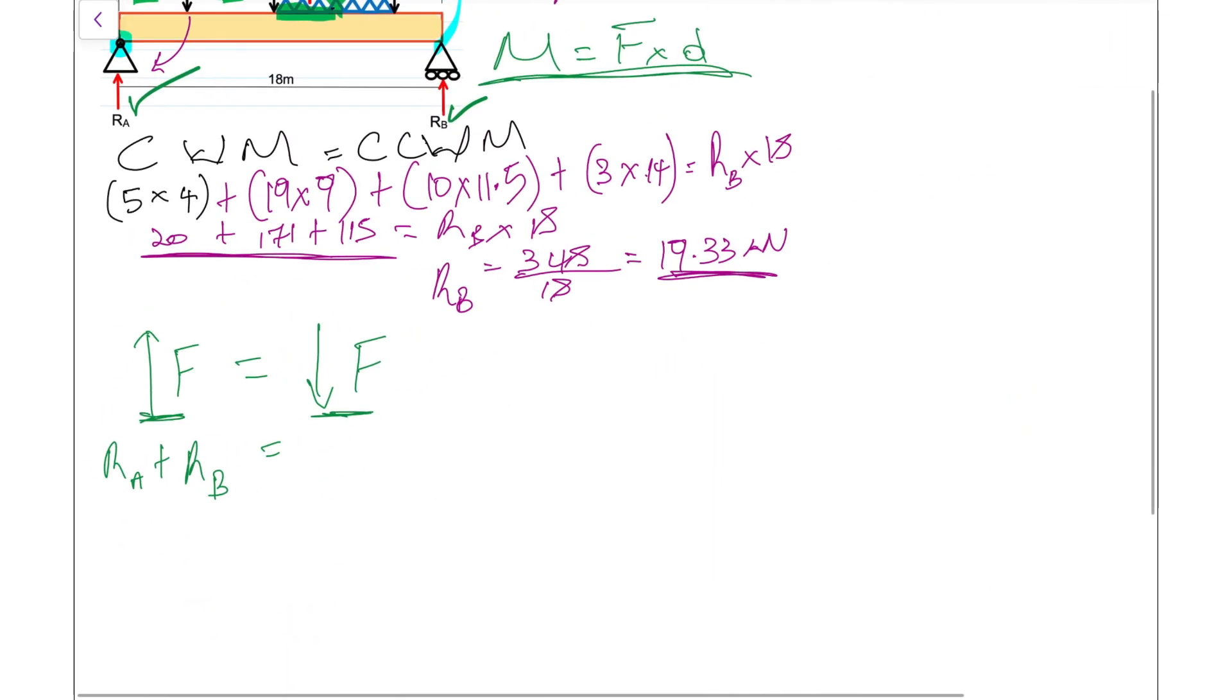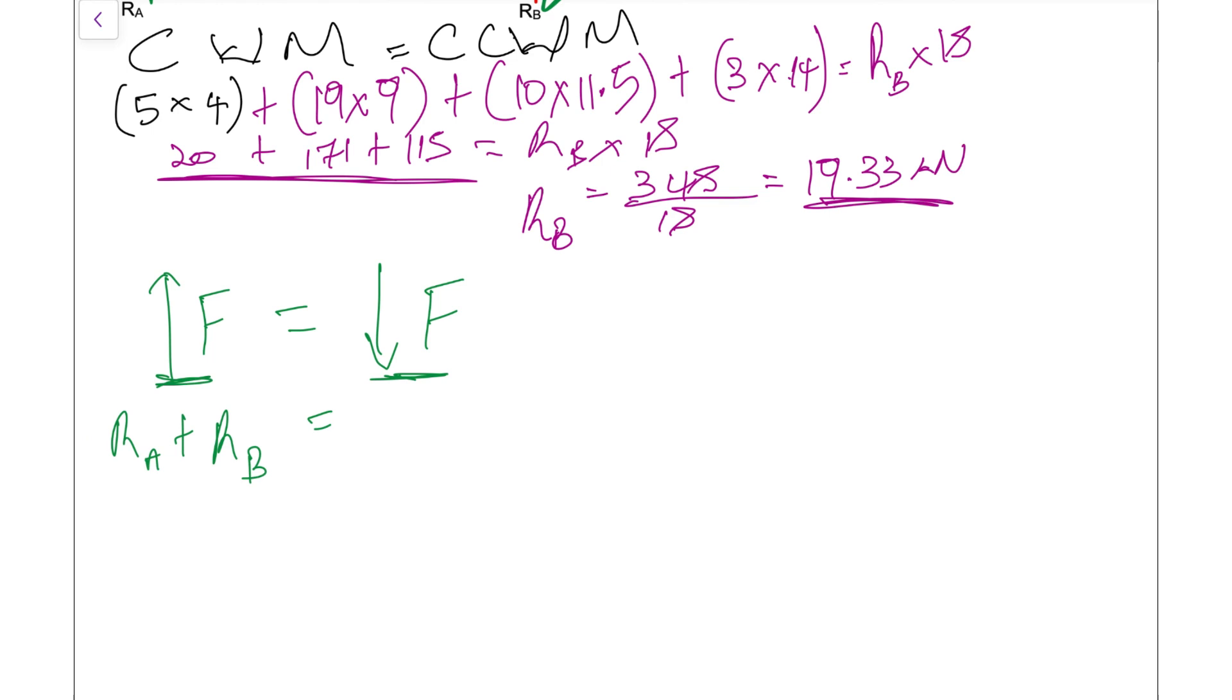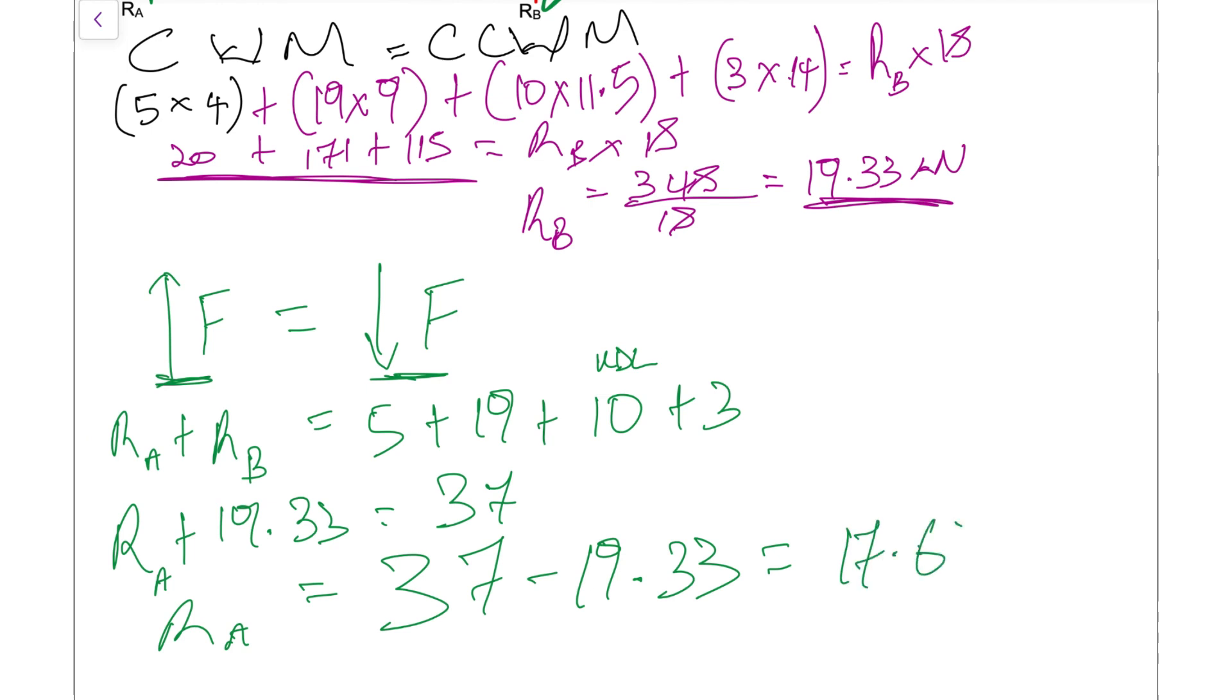Let's do that calculation. It's going to be 5 kilonewtons plus 19 plus the 10 (that's our UDL as point load) plus the 3 kilonewtons. We already know what RB is, so we can put that in: RB is 19.33. When we sum everything on the right-hand side, we get 5 plus 19 plus 10 plus 3, which is 37 kilonewtons. We subtract our RB value: 37 minus 19.33 gives us 17.67 kilonewtons. So there you go, we have RA and we have RB.